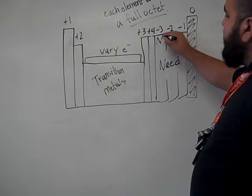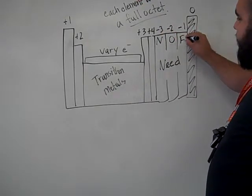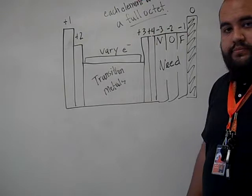So starting with nitrogen, they need 3. Oxygen group needs 2, and the fluorine group needs 1.